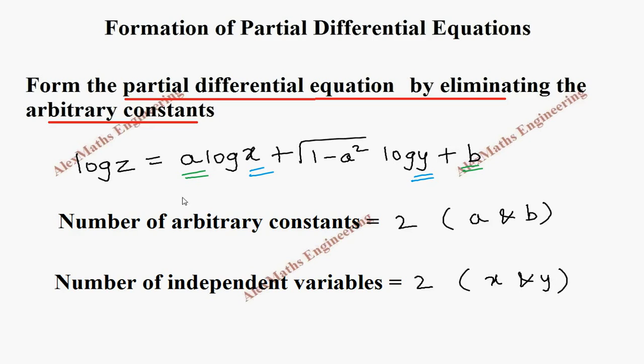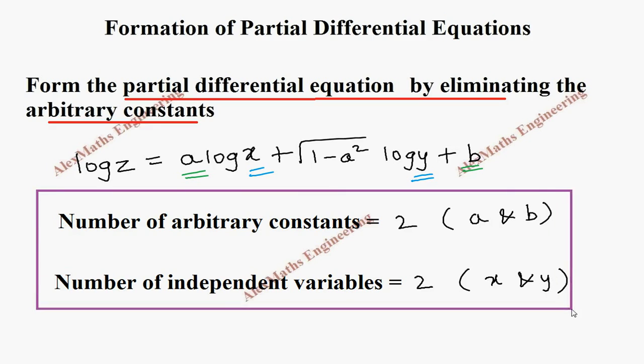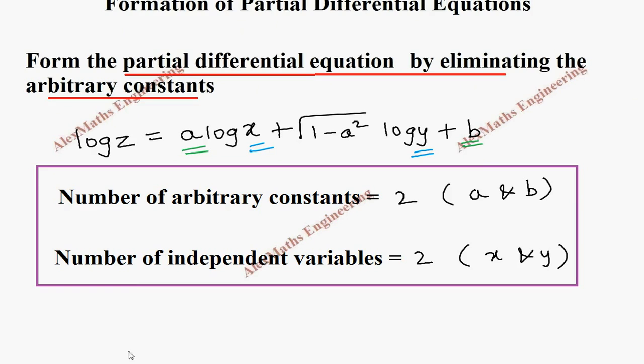When the number of arbitrary constants and number of independent variables are equal, we use only the first two differentials that is p and q. Use ∂z/∂x which is termed as p and ∂z/∂y which is termed as q. Only these two.